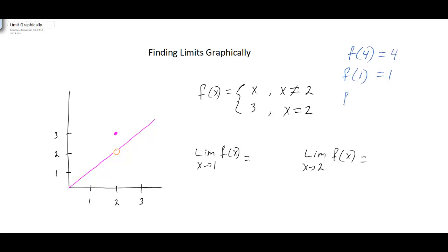Now, what happens if we want to find f of 2? Well, x is equal to 2, so x doesn't equal 2 doesn't apply, meaning we're not going to plug it into the top part. Because x equals 2, we have to plug it into the bottom part of the piecewise function, which tells us f of x is equal to 3. So f of 2 is going to be equal to 3.